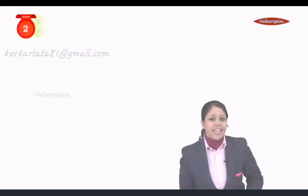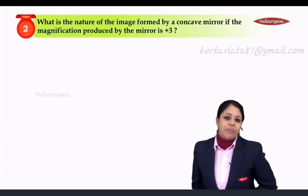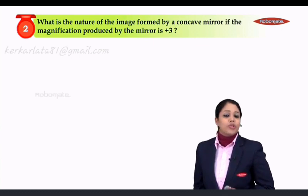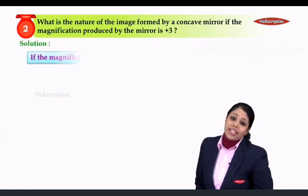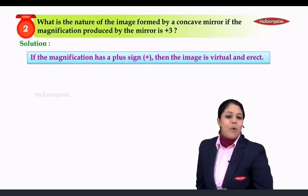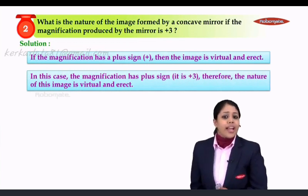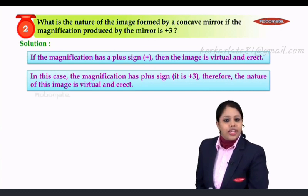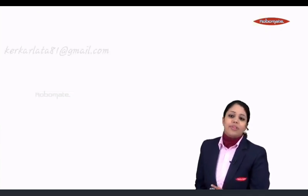Let us see the second question. What is the nature of the image formed by a concave mirror if the magnification produced by the mirror is plus 3? If the magnification has a plus sign, then the image is virtual and erect. In this case, the magnification is plus 3. Therefore, the nature of the image will also be virtual and erect.